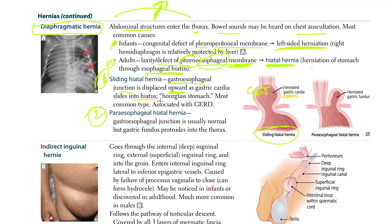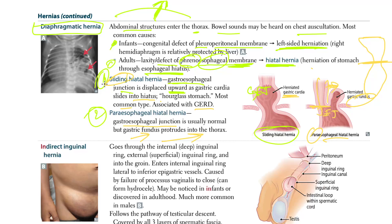The sliding hiatal hernia gives the appearance of an hourglass stomach. It is the most common type and is associated with GERD. In paraesophageal hernia, the GE junction is usually in its normal position, but the fundus of the stomach protrudes into the thorax — para (beside) the esophagus. The sliding hiatal hernia remains the most common type overall.